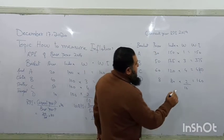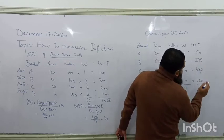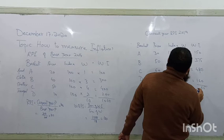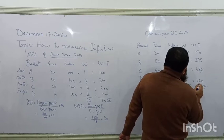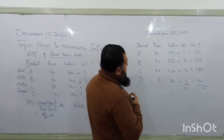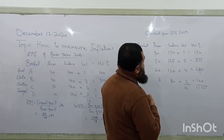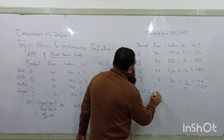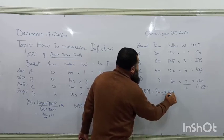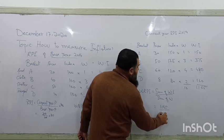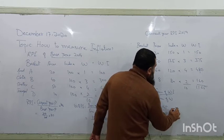Adding the weighted indices: 150 + 375 + 480 + 160 = 1165. The weighted retail price index = 1165 ÷ 10 = 116.5. The current year retail price index is 116.5.